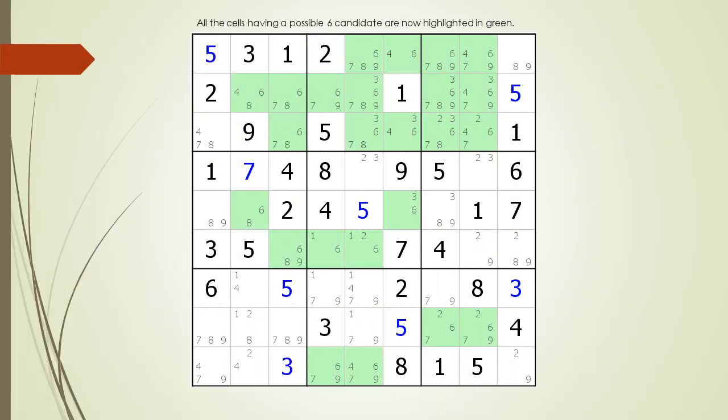Consider the following Sudoku in progress. All the cells having a possible 6 candidate are now highlighted in green.